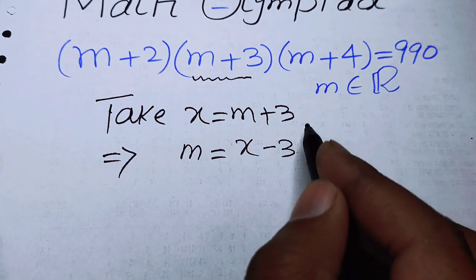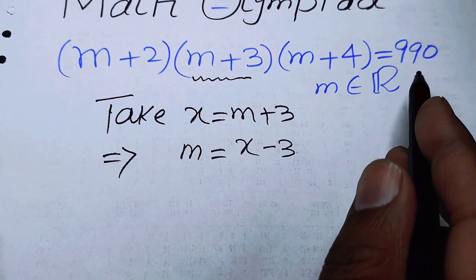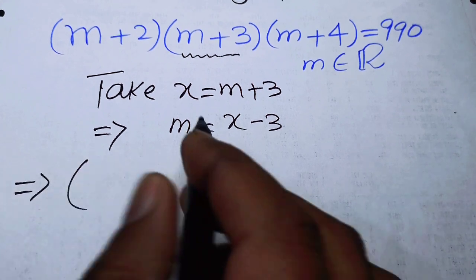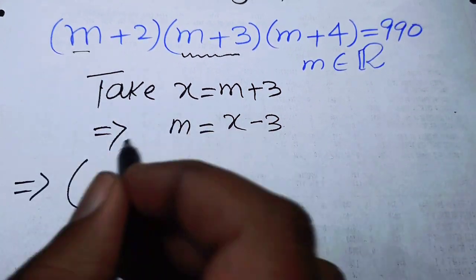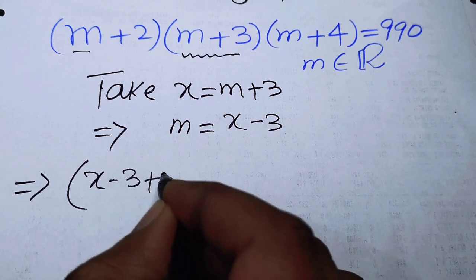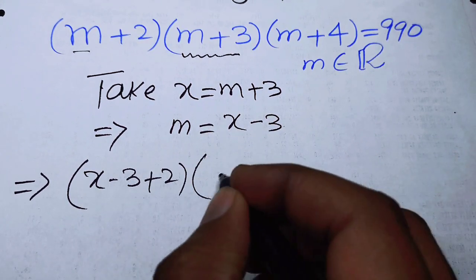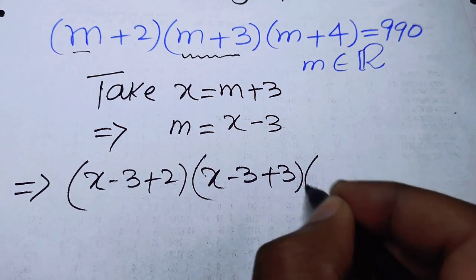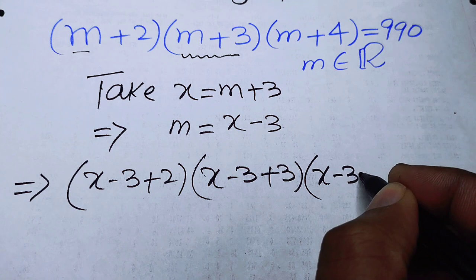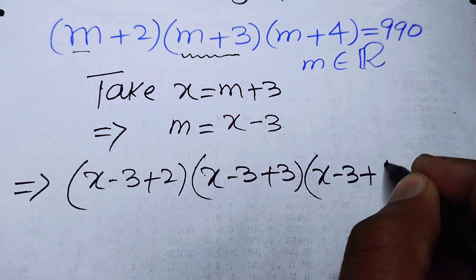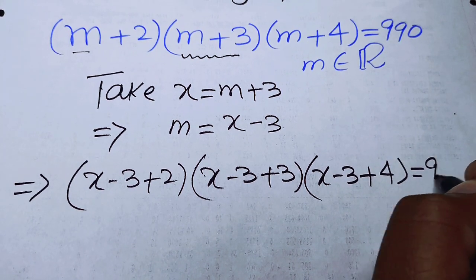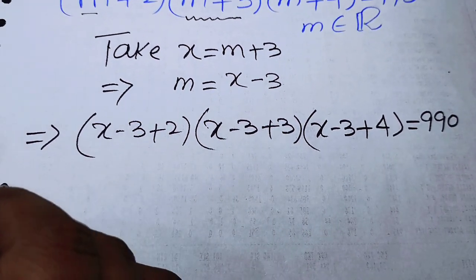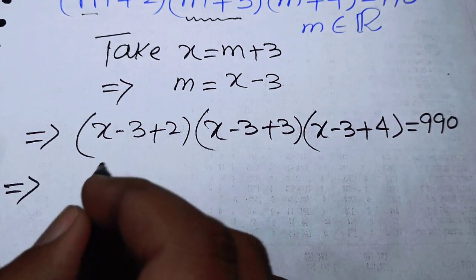Now we take these values in the given expression. We put m as x minus 3, and it becomes (x minus 3 plus 2)(x minus 3 plus 3)(x minus 3 plus 4) is equal to 990. Now we simplify this expression.